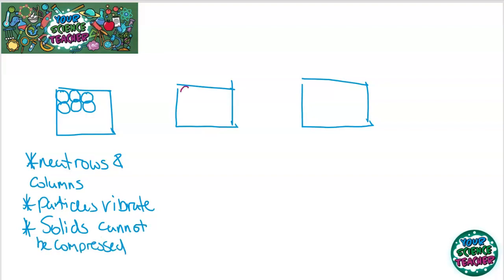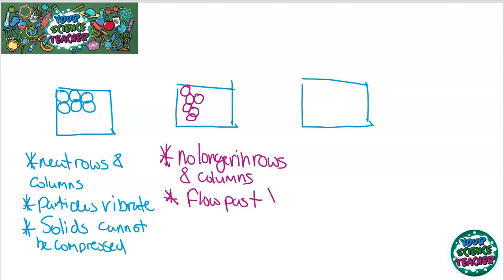Let's look at a liquid now. In a liquid, the particles are still touching. However, look, there are air gaps. This means that the particles are no longer in rows and columns. This means that the particles can flow past one another and slide past one another, and this means that liquids take the shape of the container that they are in.